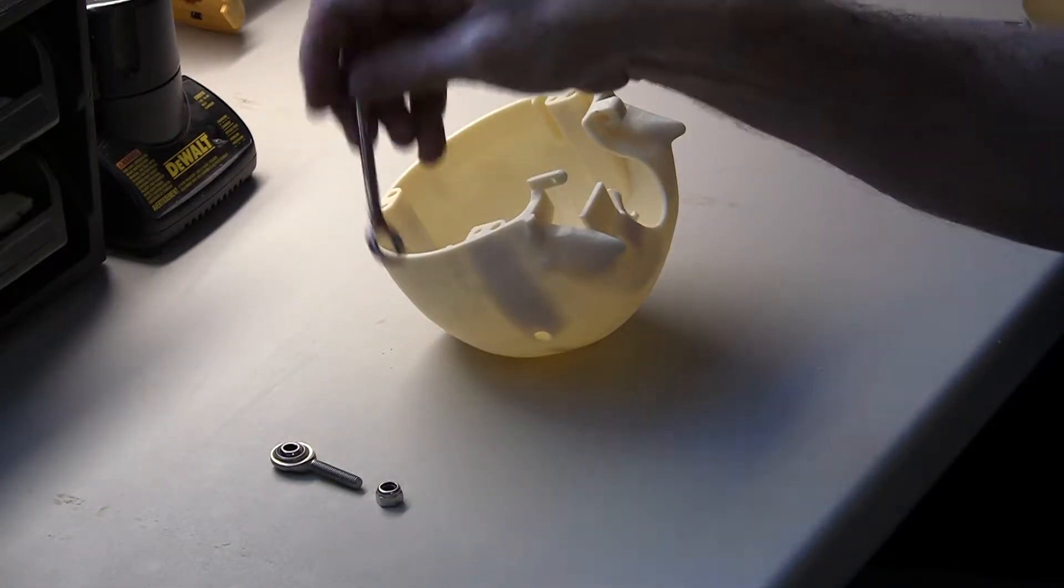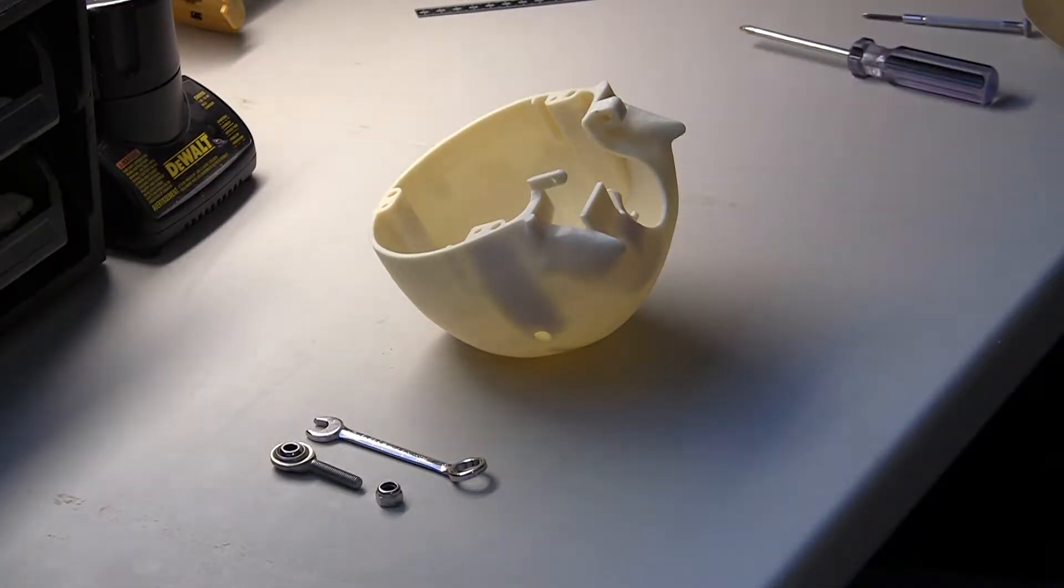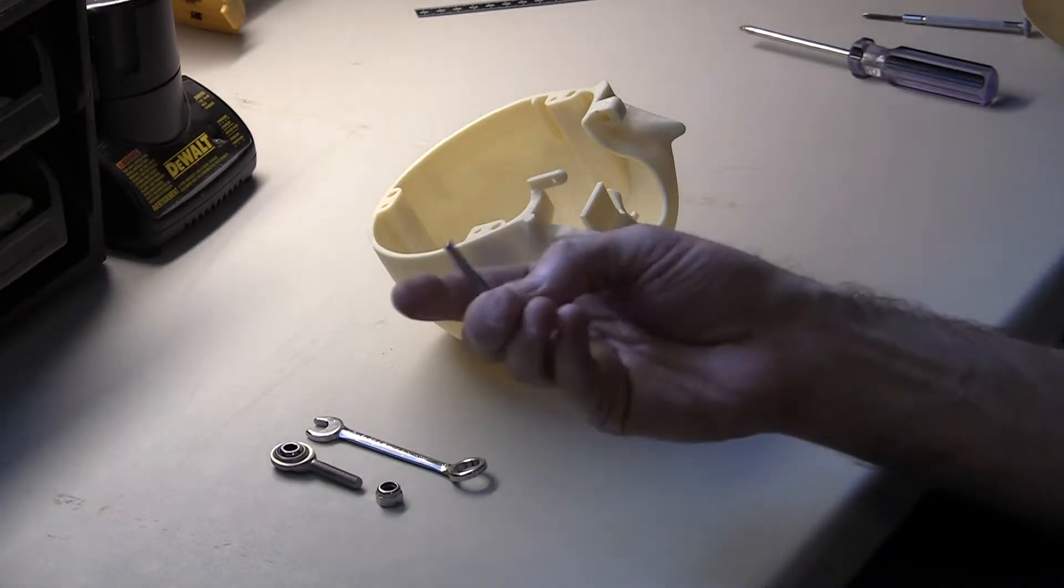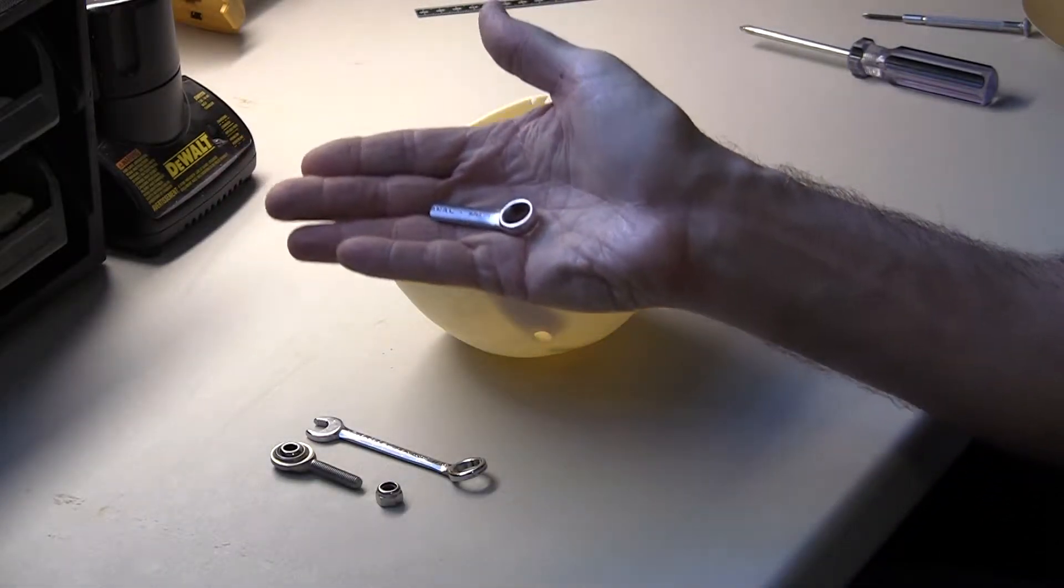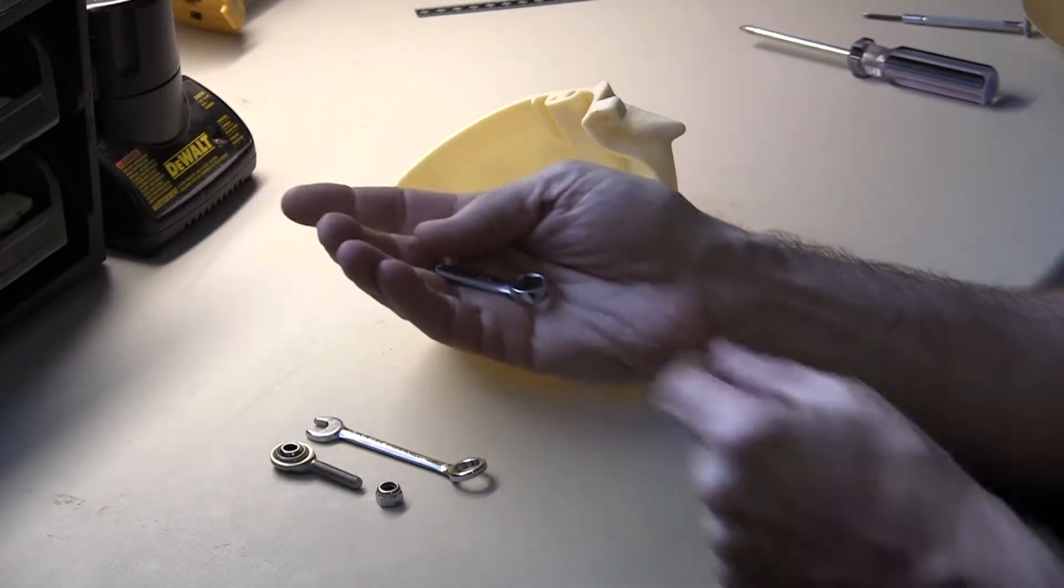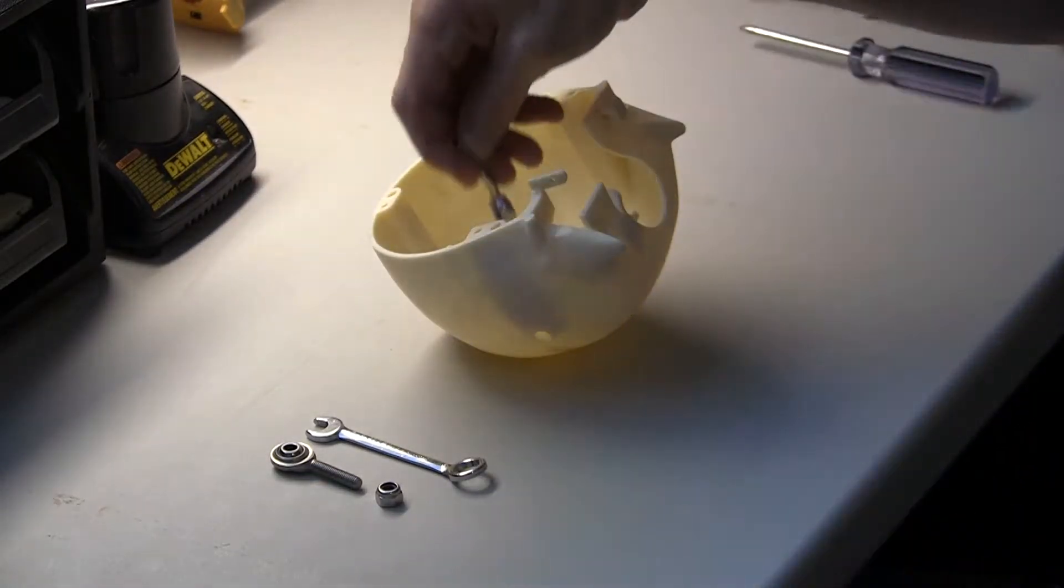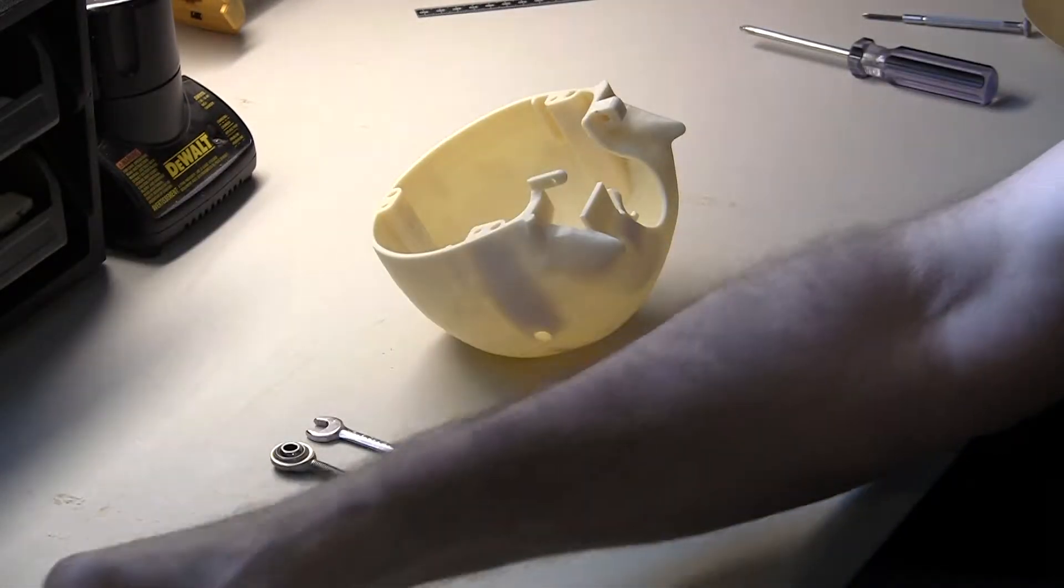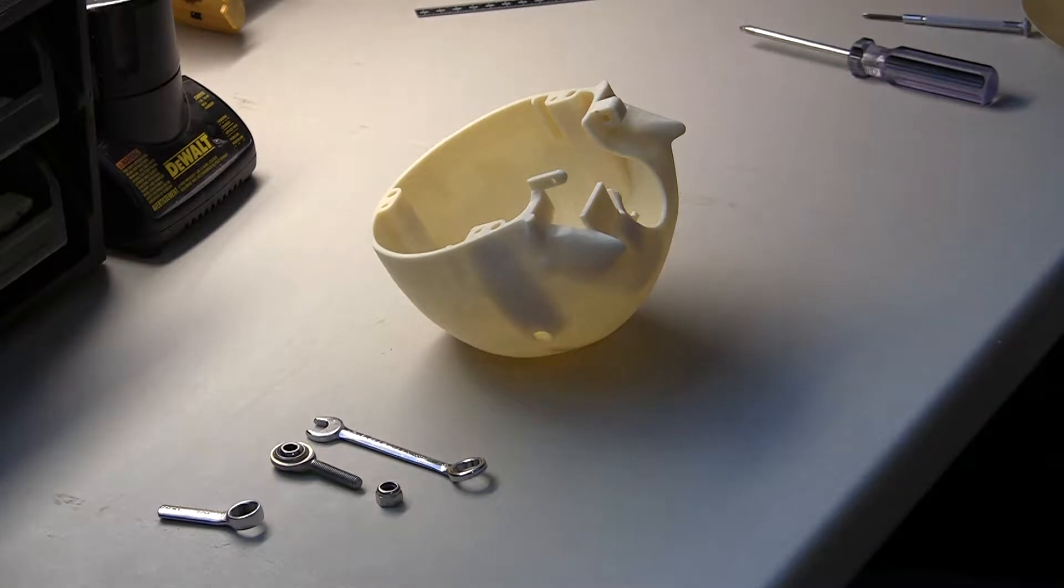If you don't have a stubby one and you don't want to buy it, but you happen to have another 7/16 wrench laying around, you can always do this. I took a 7/16 wrench and just cut it. So I've got the round part here, and that will also fit inside the skull quite nicely.